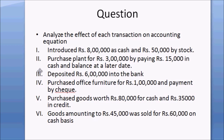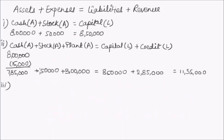The third transaction is to deposit rupees 6 lakhs into the bank. The accounts involved are bank and cash, since cash is being withdrawn and deposited into the bank. There will only be a change on the left-hand side of the equation — no change on the right-hand side.